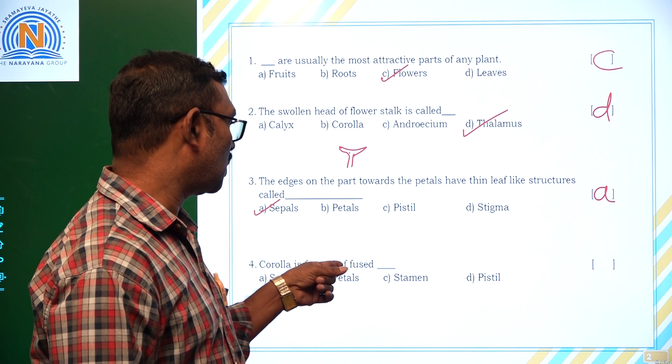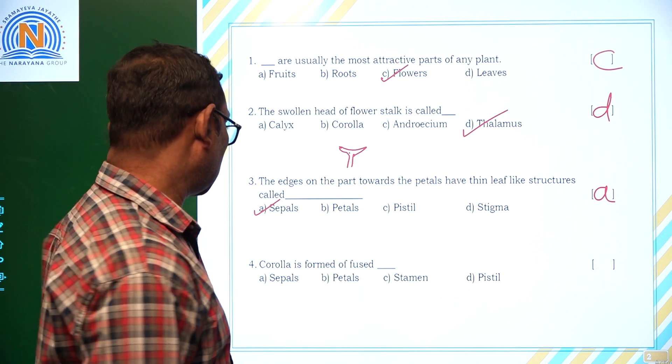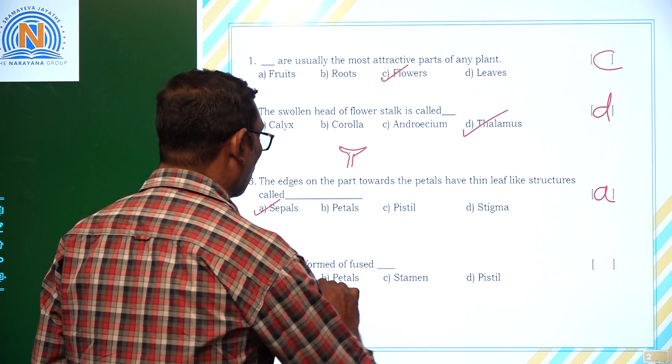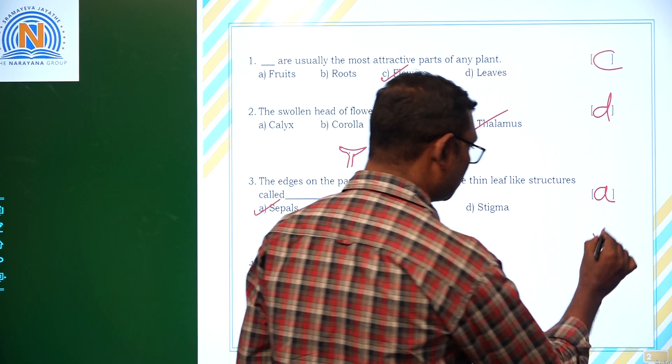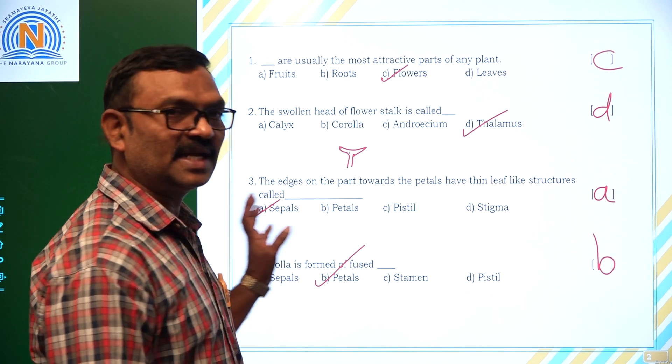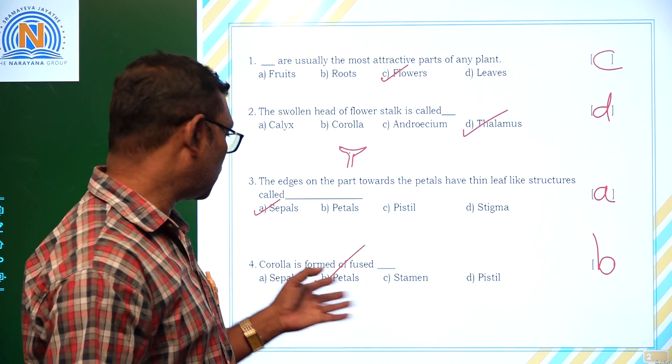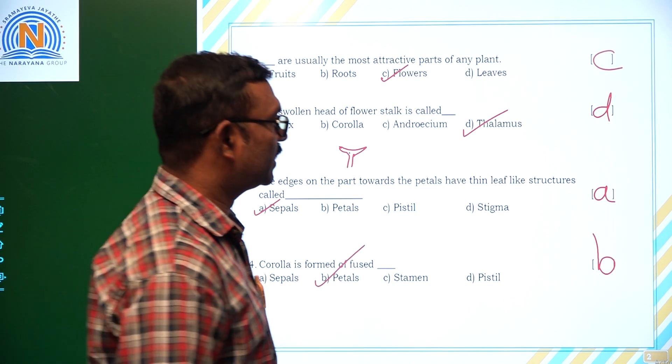Next, Corolla is formed of fused petals. Corolla is formed by fused petals, option B. Then, Calyx is formed by fused sepals in Datura flower. Right.